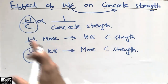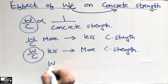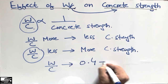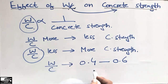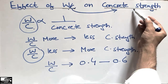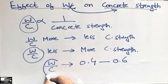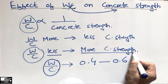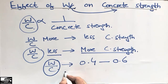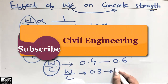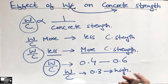The general range of the water-cement ratio is from 0.4 to 0.6 for many construction projects. However, this ratio is not fixed — it depends on your project. If you want high-strength concrete, you will decrease the water-cement ratio. For example, if you decrease it to 0.3, you will get high-strength concrete.